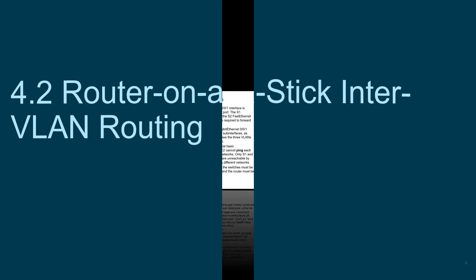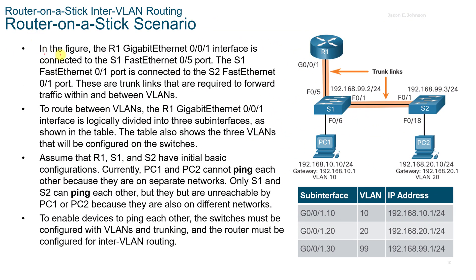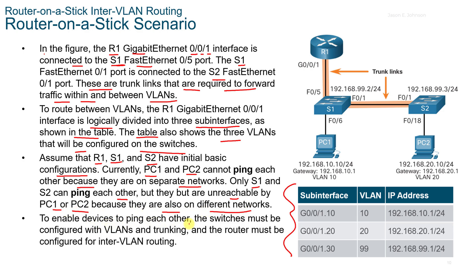4.2 Router on a Stick Inter-VLAN Routing. In this scenario, R1 Gigabit Ethernet 0/0/1 interface is connected to Switch 1 Fast Ethernet 0/5 port, and Switch 1 Fast Ethernet port is connected to the S2 Fast Ethernet port. These trunk lines are required to forward traffic within and between VLANs. To route between VLANs, the R1 Gigabit Ethernet interface is logically divided into three sub-interfaces. Currently PC1 and PC2 cannot ping each other because they're on separate networks. To enable devices to ping each other, the switches must be configured with VLANs and trunking, and the router must be configured for inter-VLAN routing.